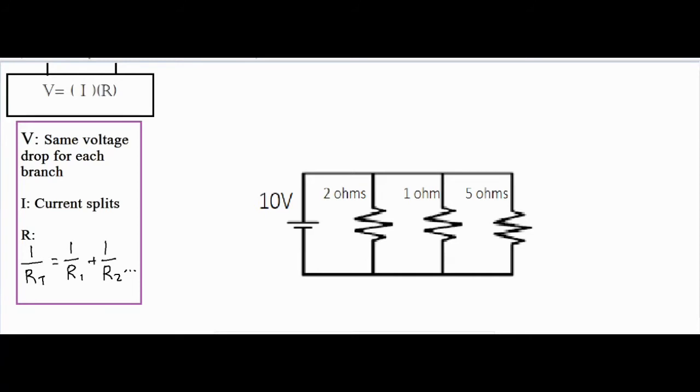In a parallel circuit, you have multiple loops, as opposed to a series circuit that has a single path for the electrons to go on. As the electrons move out of the power source, they may either go through this loop, this loop, or this one.